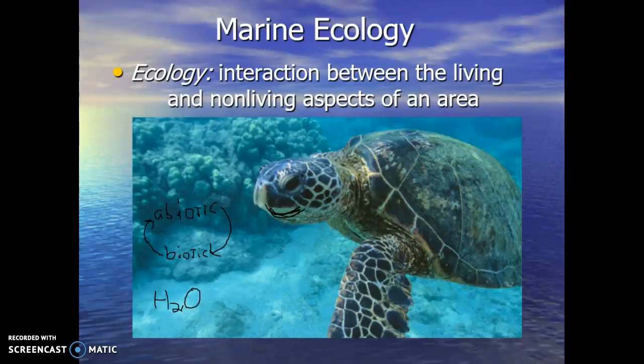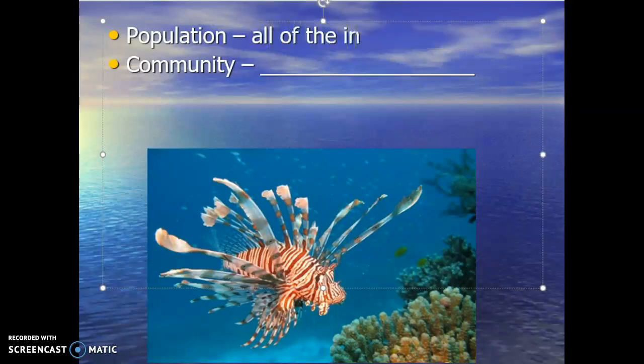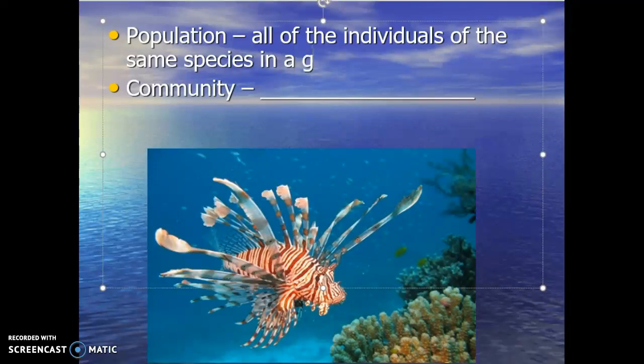That is the nature of ecology — to study these interactions. As one changes, it influences the other. If your water temperature changes, that influences what can live there. If the population of turtles goes up or down, that influences the non-living aspects of that area. With marine ecology, we are applying that study to the marine ecosystem. When we explore ecosystems and ecology, we always look at populations — all of the individuals of the same species in a given area.